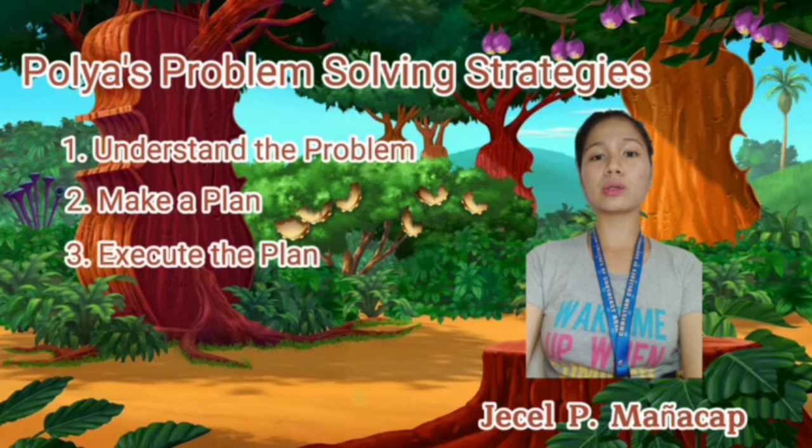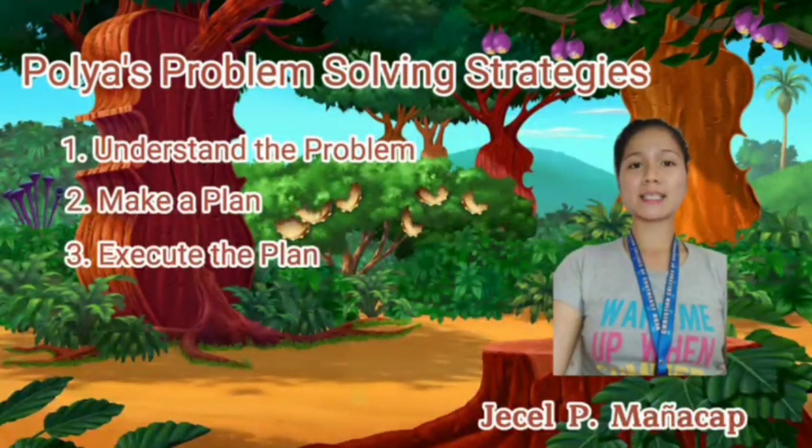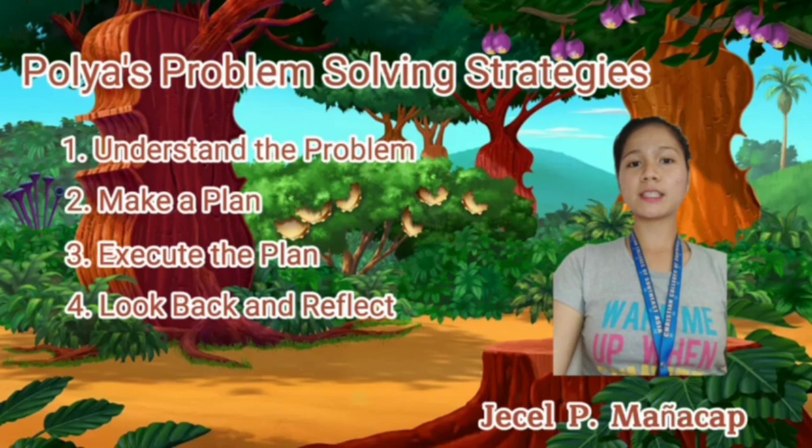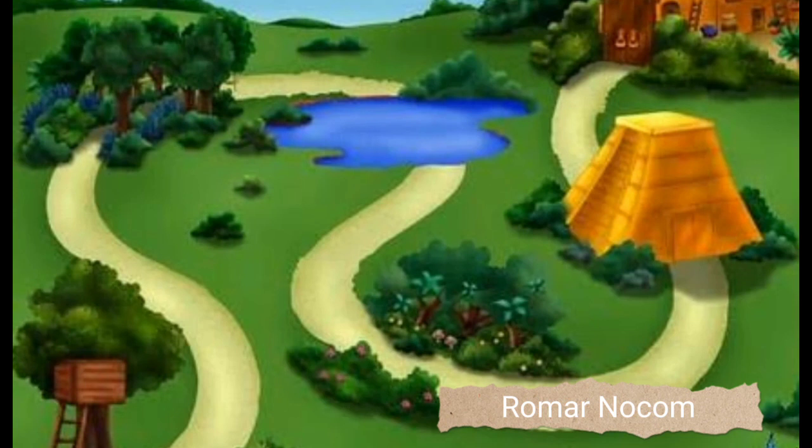Second is make a plan — come up with some strategies for solving the problem. The third one is execute the plan — use the strategy chosen in step 2 to solve the problem. The fourth and last step is look back and reflect. Part of step 4 is to find a way to check your answer, preferably using a different method than what you used to solve the problem.